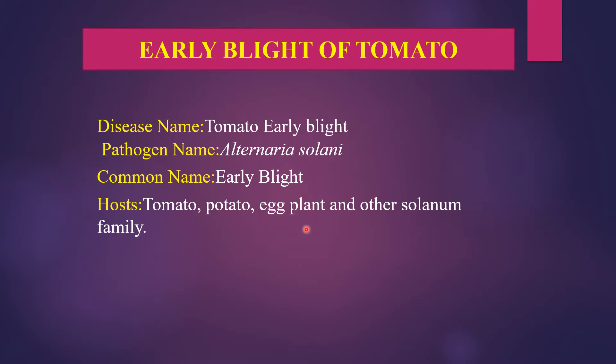The hosts of early blight include tomato, potato, eggplant, and other Solanum family members.